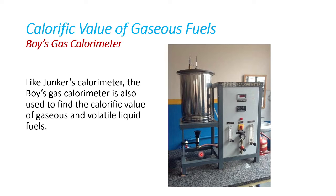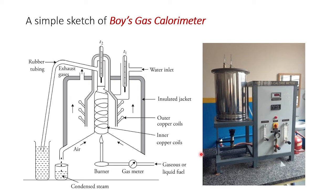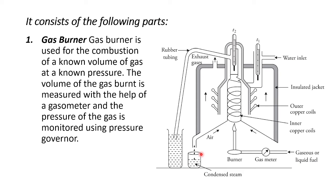Another device used to measure the calorific value of a gaseous fuel is the Boy's gas calorimeter. Like the Junker's calorimeter, the Boy's gas calorimeter is also used to find the calorific value of gaseous and volatile liquid fuels. Here is the cross section of the Boy's gas calorimeter. It also has a gas burner used for the combustion of a known volume of gas at a known pressure. The volume of the gas burned is measured with the help of a gasometer, and the pressure of the gas is monitored using a pressure governor.